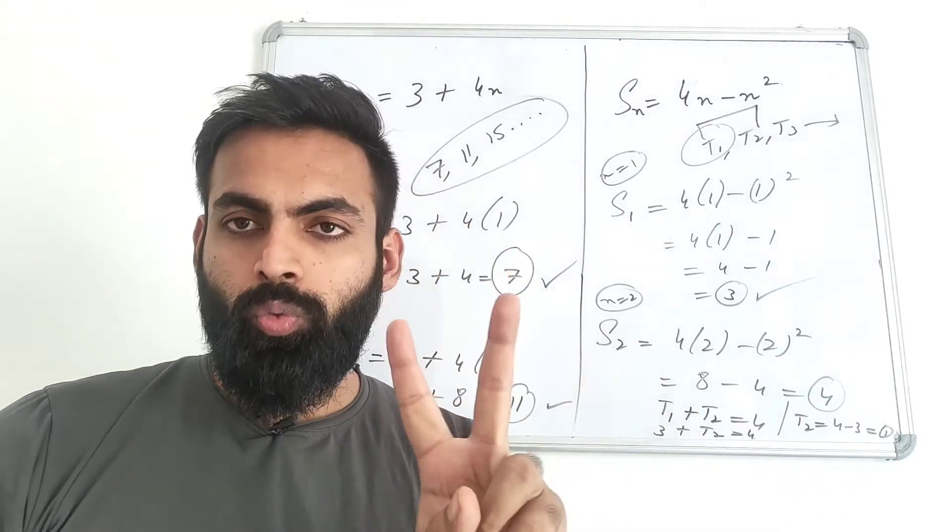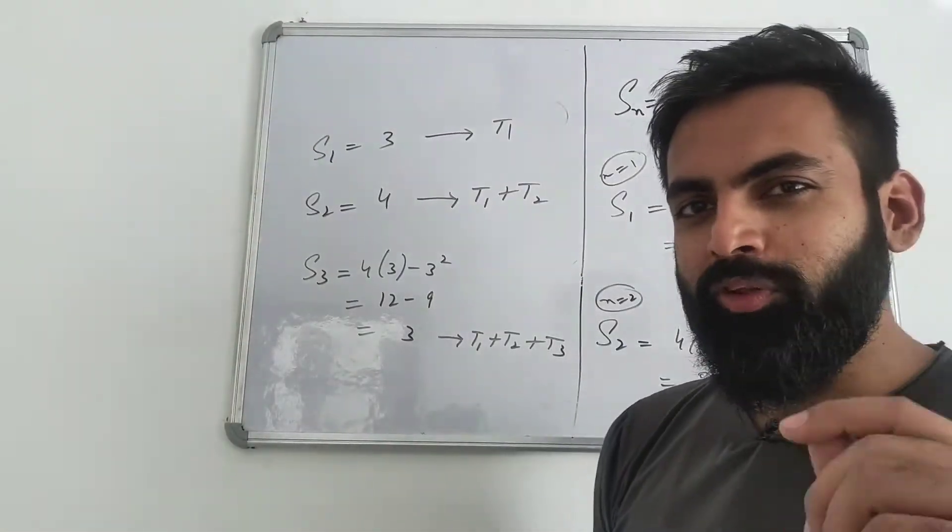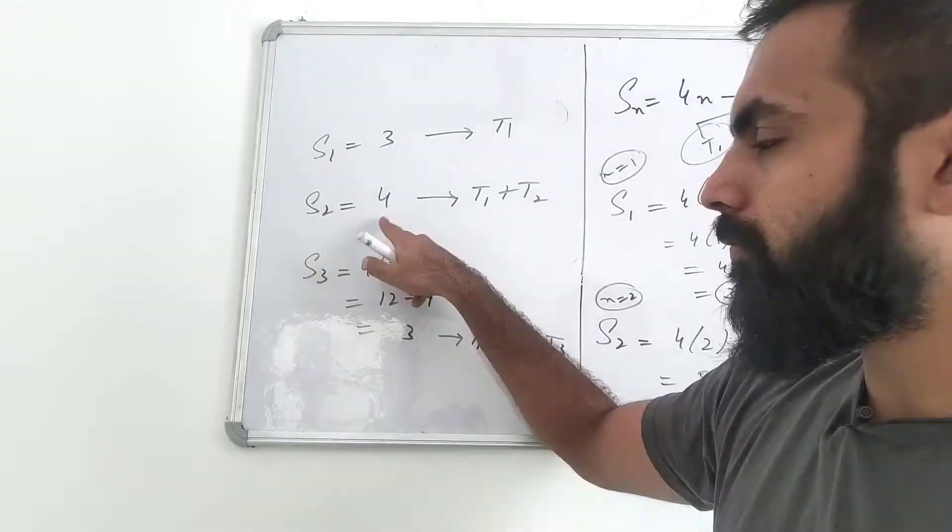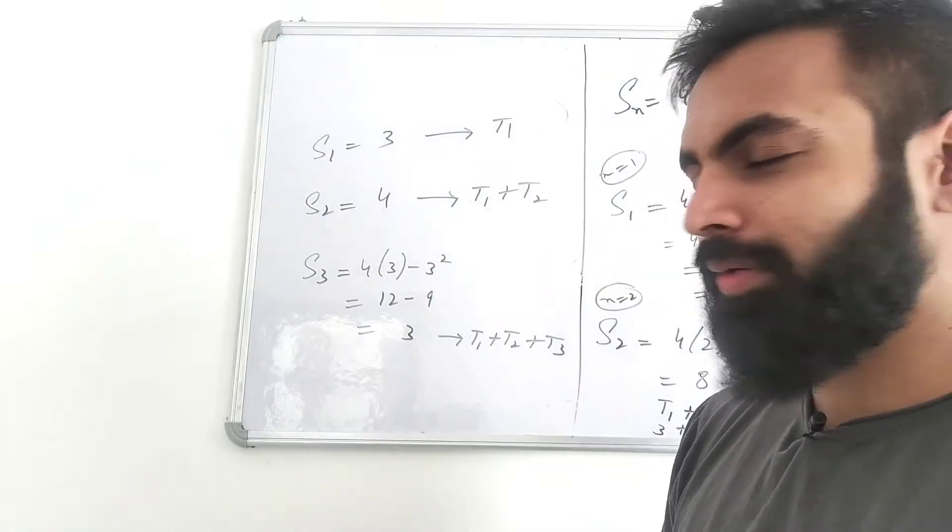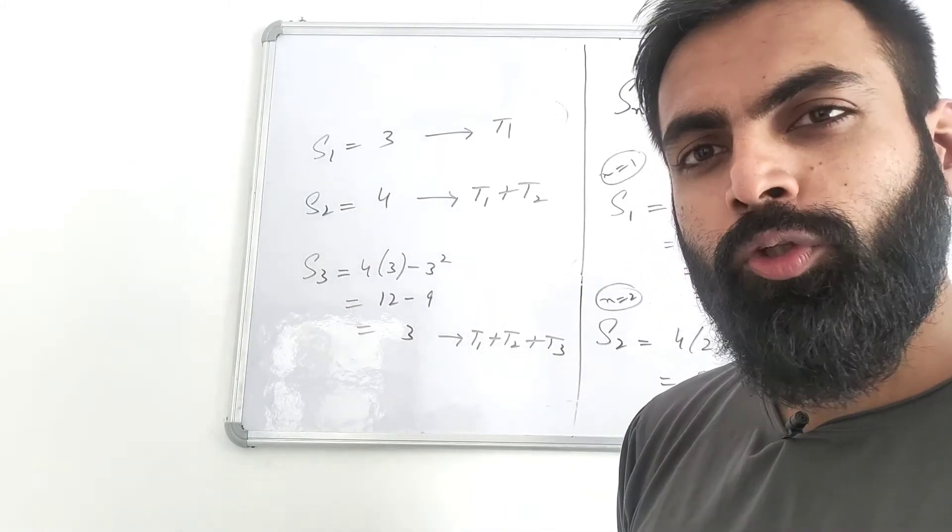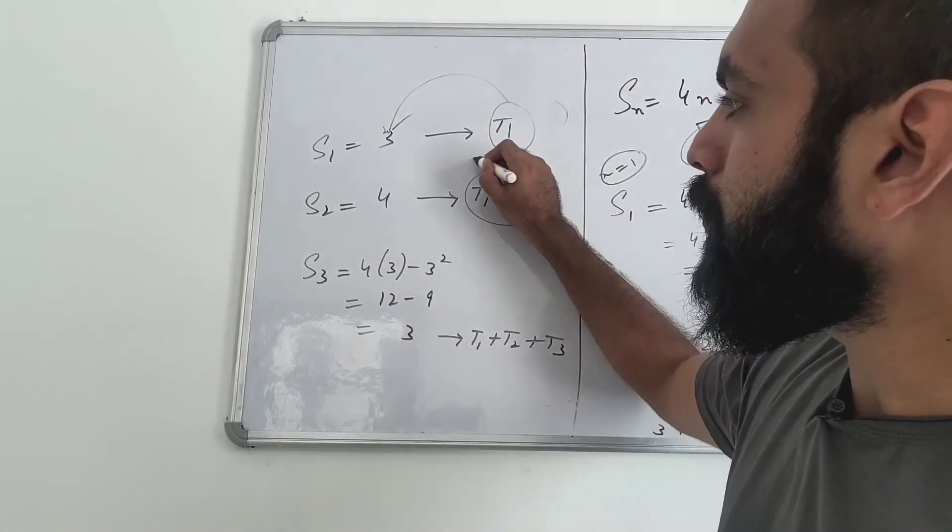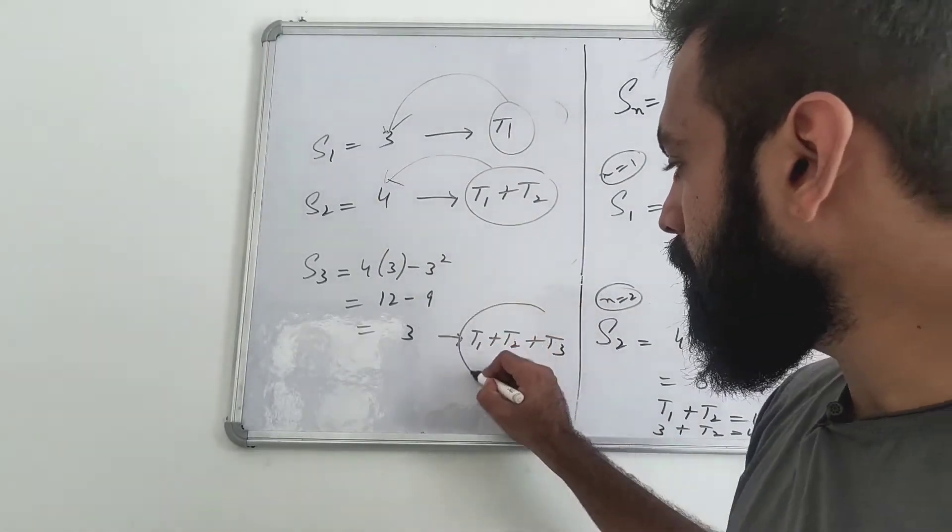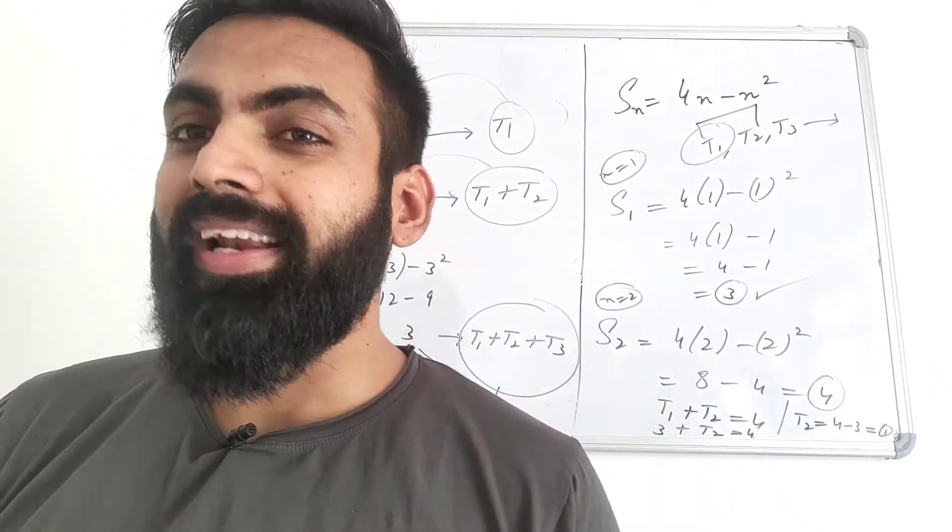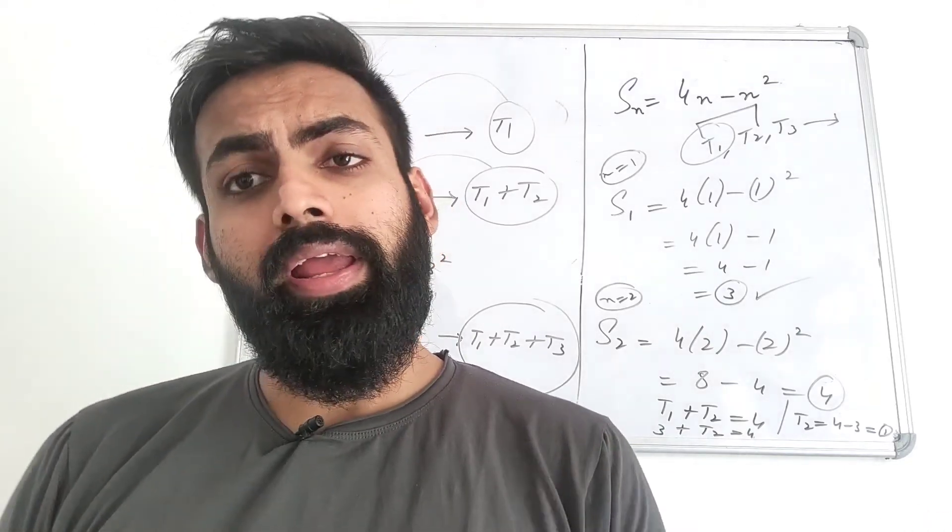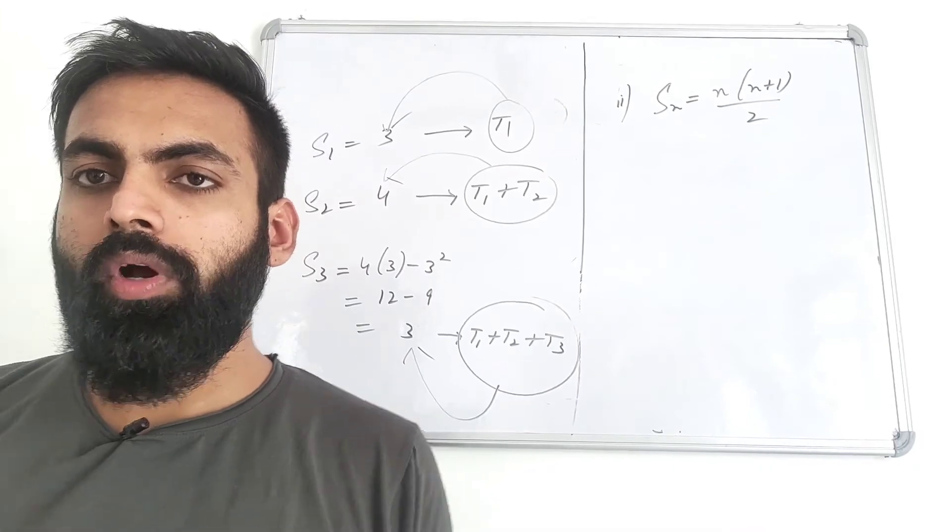How did I get this AP? As I know that S2 is sum of first two terms, T1 and T2 add to give me 4. If I summarize, in this question you have sum of first term is 3, sum of first two terms is 4. To give this notation, S1 means the first term, S2 means the first two terms, S3 means the first three terms. If I read it mathematically, it means T1 is only 3, sum of first two terms means T1 plus T2 is 4, sum of first three terms is T1 plus T2 plus T3. I'm also giving another expression of SN, SN equals N into N plus 1 by 2. You also have to find AP.